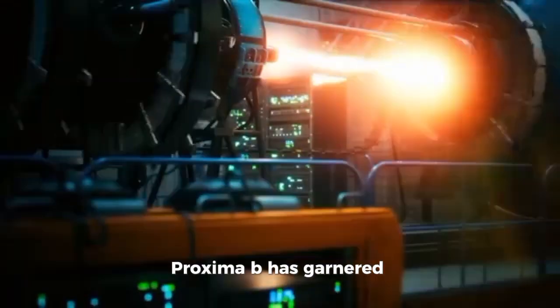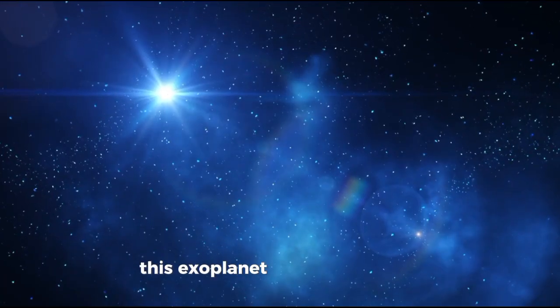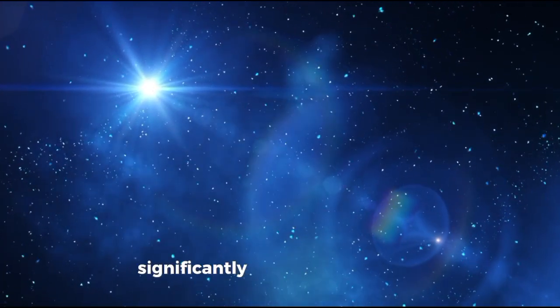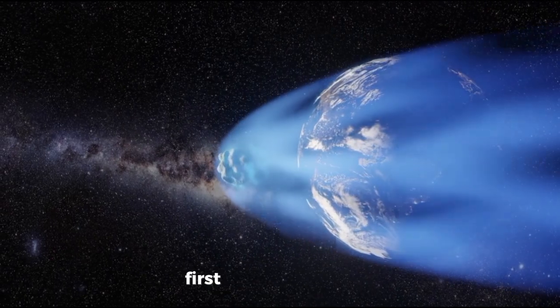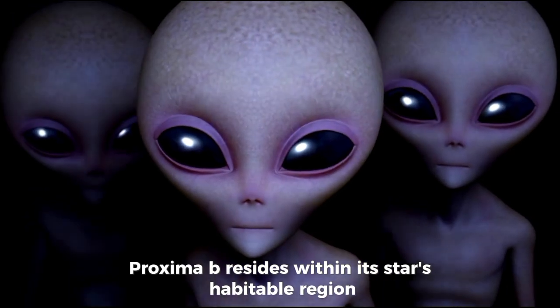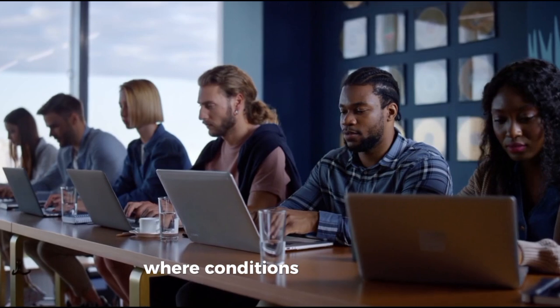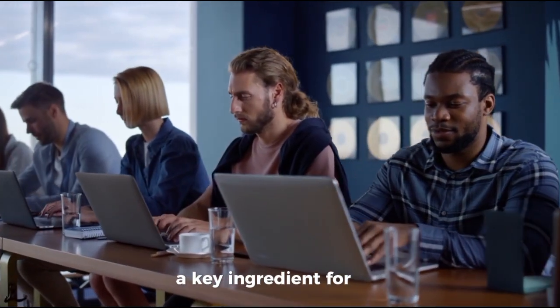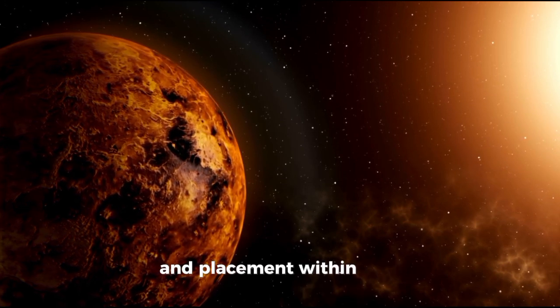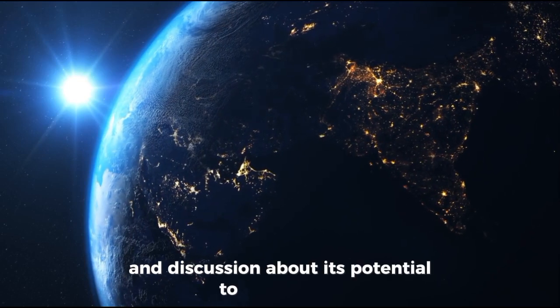Proxima b has garnered considerable interest because of its potential habitability. This exoplanet orbits its parent star, Proxima Centauri, a red dwarf significantly smaller and cooler than our Sun. First detected in 2016, Proxima b resides within its star's habitable region commonly known as the Goldilocks zone, which denotes the area where conditions might allow liquid water, a key ingredient for life as we know it, to exist. Thanks to its nearness to Earth and placement within this temperate belt, Proxima b has inspired intense interest and discussion about its potential to support life.